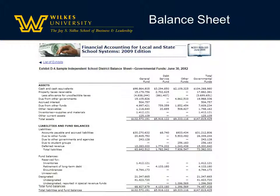For the government, it's really called the statement of net assets, but it's got the same information as a balance sheet. It actually assesses the balance of a government's assets — the resources it can use to provide services, which we call assets — and the things that it owes, the obligations it has to turn over resources to other organizations, which we call liabilities. The difference between a government's assets and its liabilities is called net assets, and the name of the statement really reflects its emphasis on what a government would have left over after satisfying its liabilities.